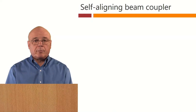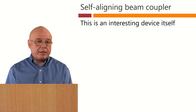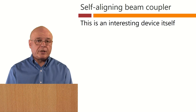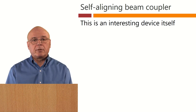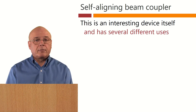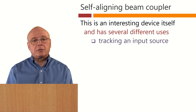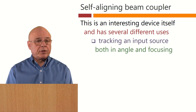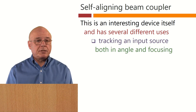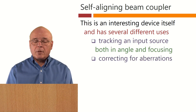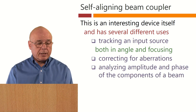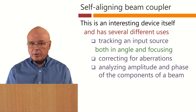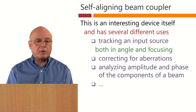This self-aligning beam coupler is an interesting device in itself. Obviously it can align itself to couple a beam, but it has several other possible uses. For example, it can track an input source by continuing to align itself, both in angle and in focusing. It can correct for aberrations, and it can analyze amplitude and phase of the components of a beam.